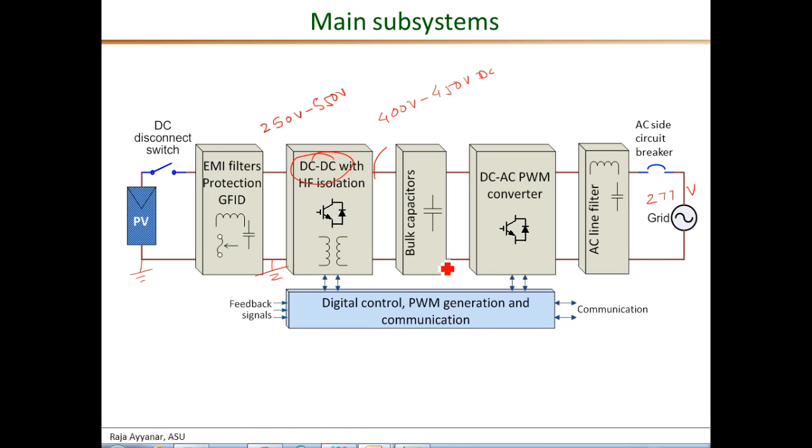We need these large bulk capacitors because in a single phase system the instantaneous power that is injected into the grid is pulsating. It is pulsating at twice the line frequency, 120 hertz in the US, whereas we want the power taken from the PV panels instantaneously to be a smooth continuous power so that we always operate at the maximum possible power from the PV arrays.